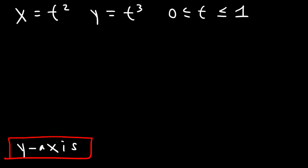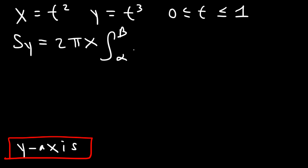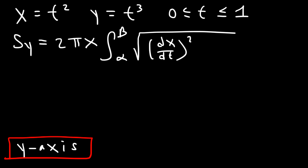So how is the formula different in this case? For S sub y, it's not going to be 2π y. This time it's 2π x times the integral from alpha to beta. The rest is the same: the square root of (dx/dt)² plus (dy/dt)².